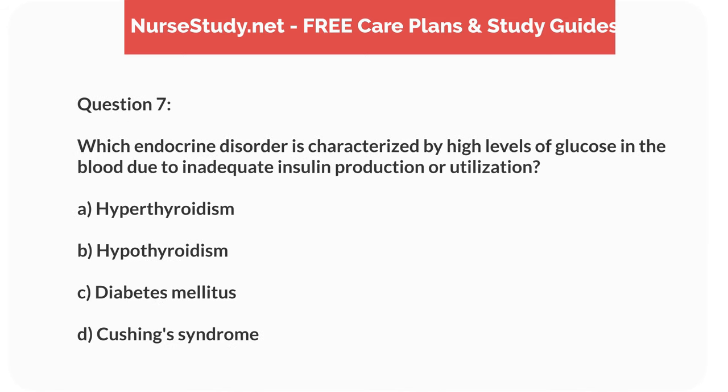Question 7. Which endocrine disorder is characterized by high levels of glucose in the blood due to inadequate insulin production or utilization? A. Hyperthyroidism. B. Hypothyroidism. C. Diabetes mellitus. D. Cushing syndrome.